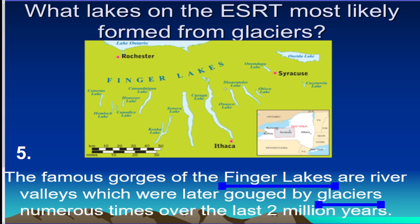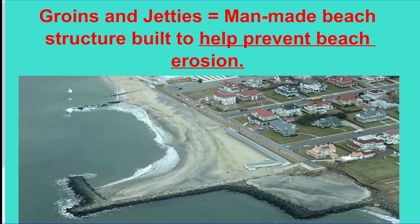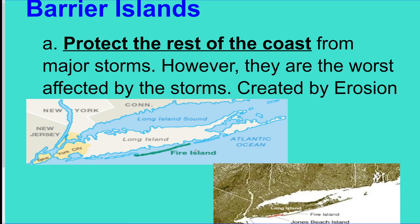The Finger Lakes on the reference table were formed by glaciers moving from north to south. Beach features: longshore current — waves strike the beach at an angle, causing sand to move down the beach. Groins and jetties are giant walls that prevent beach erosion and help grow the beach back. Barrier islands protect the coastline from storms and hurricanes.